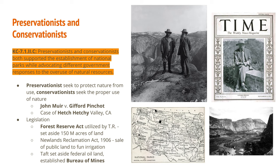That picture of Hetch Hetchy is black and white because today the whole valley is filled with water. For legislation from this period: the Forest Reserve Act was utilized by Teddy Roosevelt to set aside 150 million acres of land for the conservationist movement. The Newlands Reclamation Act sold public land with proceeds funding irrigation projects. President Taft, also considered a progressive president, set aside federal oil land to lease to companies for oil extraction and established the Bureau of Mines to regulate the amount of mining on federal land.